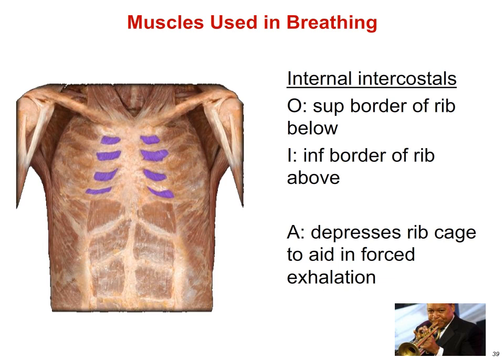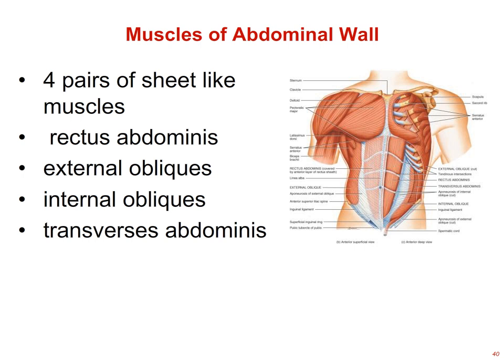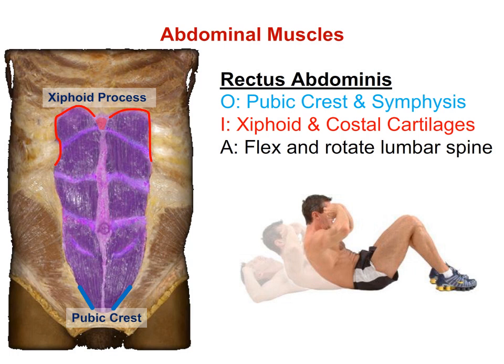Now we'll look at the muscles of the abdominal wall — four pairs of overlapping sheet-like muscles: the rectus abdominis, external obliques, internal obliques, and transverse abdominis. The most medial is the rectus abdominis. Rectus means straight, and it's your six-pack. It originates on the pubic crest and inserts on the xiphoid and costal cartilages. When it shortens forcefully, the lumbar spine flexes forward. The function of the rectus abdominis is to flex and rotate the lumbar spine — doing sit-ups is a good way to build this muscle.